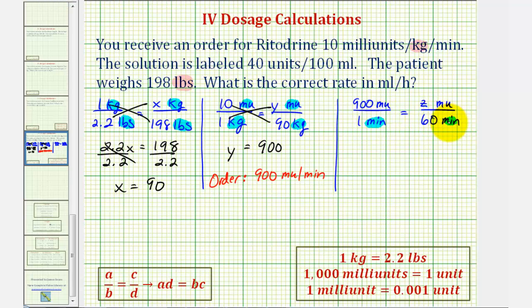Again, we have the same units on the bottom, same units on the top, so now we can cross multiply and solve for z. One times z is z, 900 times 60 is equal to 54,000, which means now we can write the order as 54,000 milliunits per one hour.